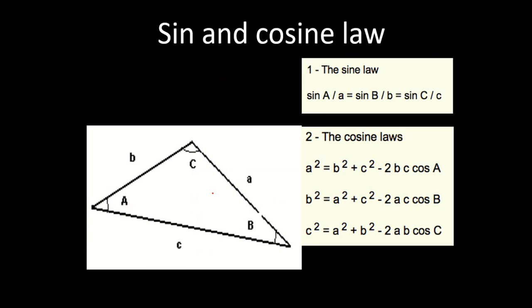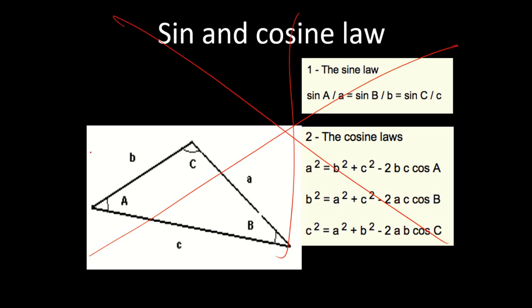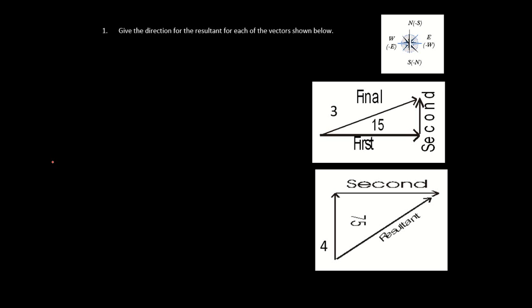Okay, sine law — we don't need that, that's kind of grade 12 physics. So we don't need to worry about that. The question asks: give the direction of the resultant for each of the vectors shown below. This is called the resultant.